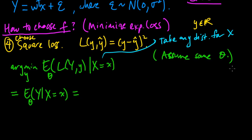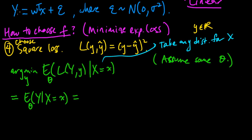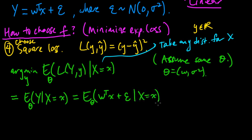So, you can look at the video on square loss, if you're not familiar with that. And now, let's plug in what y is. So, y is this thing, right? Theta is w and sigma squared. So y is, under this model, the inner product of w with x, the dot product, plus this epsilon, given x equals little x.